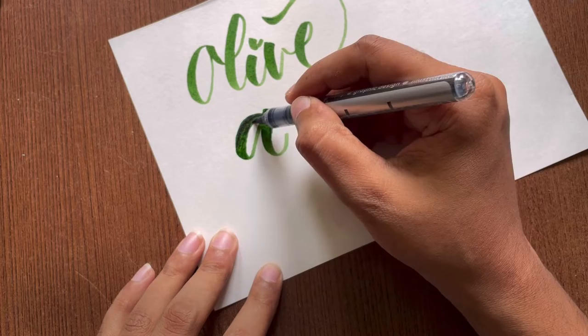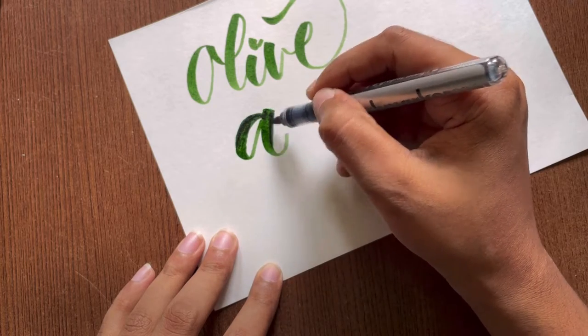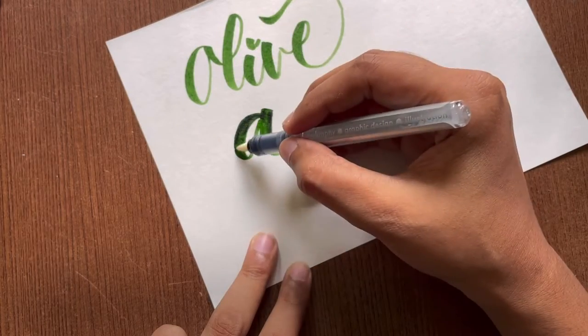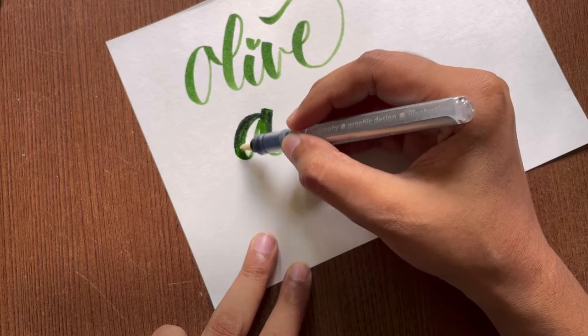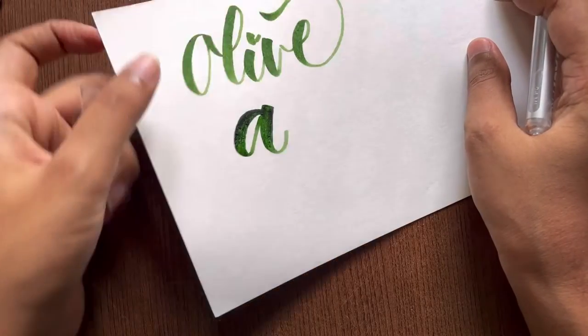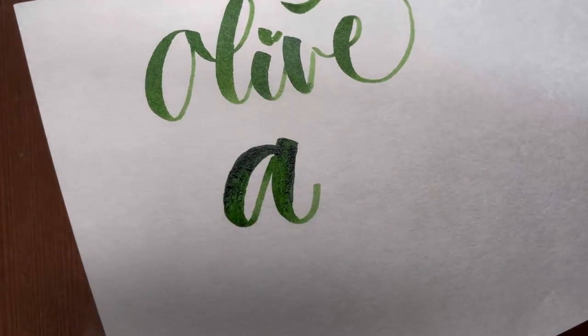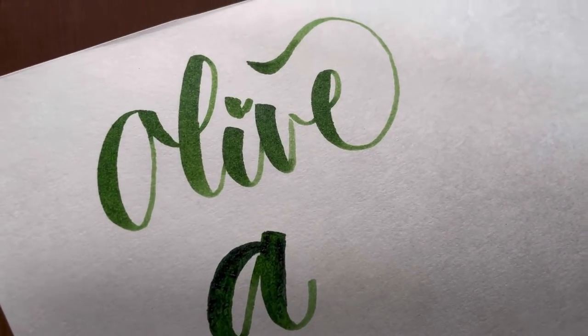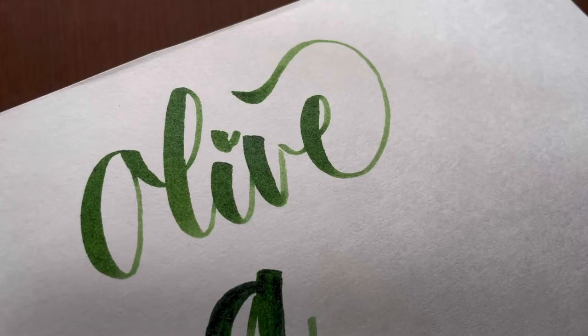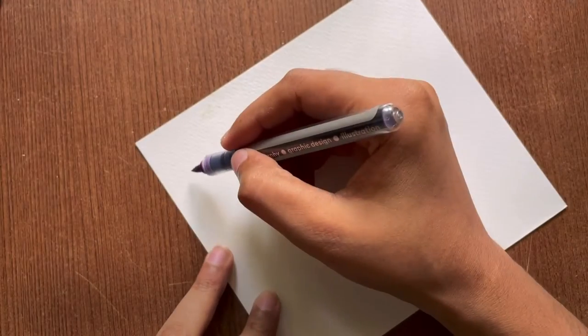As you can see when I was using the blender, some of the residue of the paper came off and the blend was not at all good. But it was good lettering for the first time on 120 GSM.